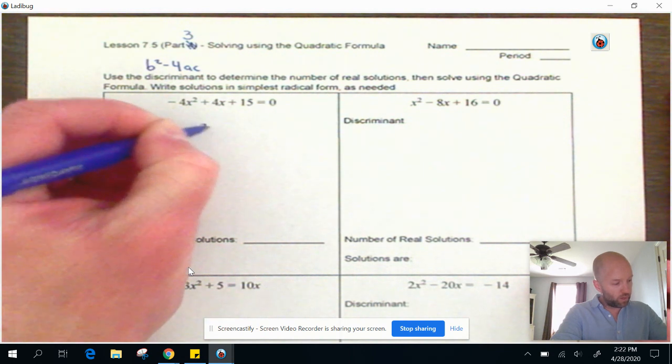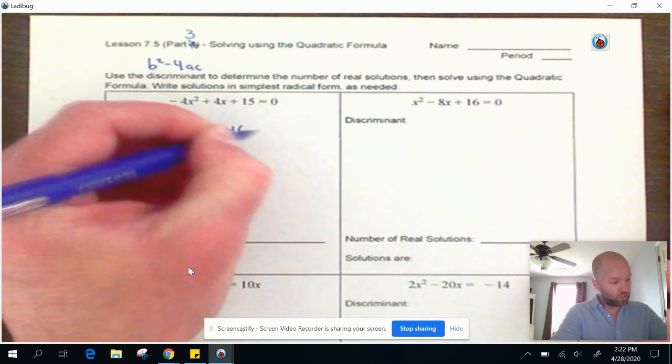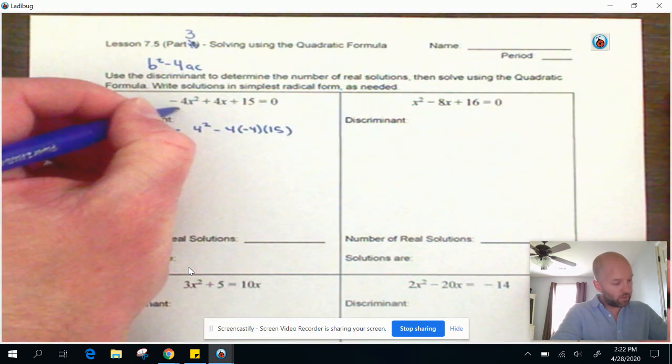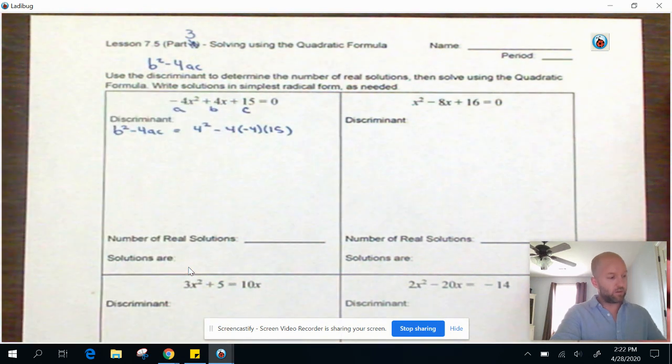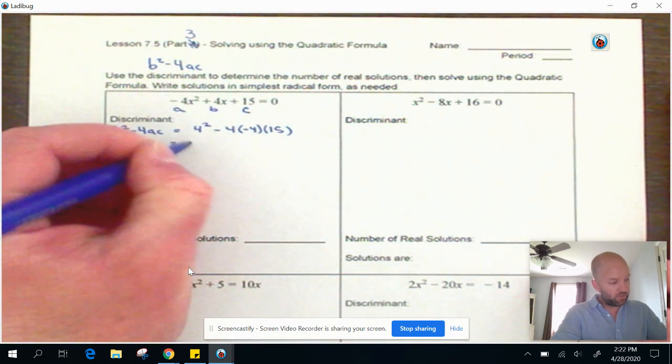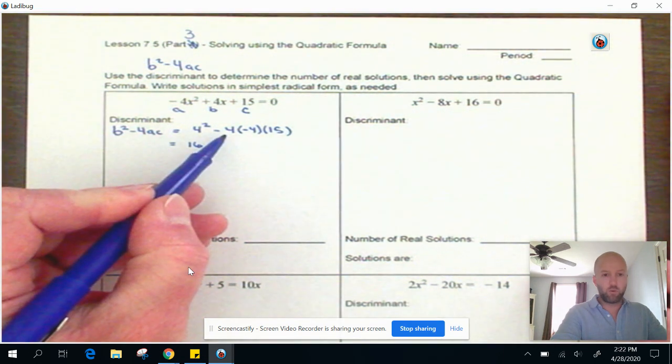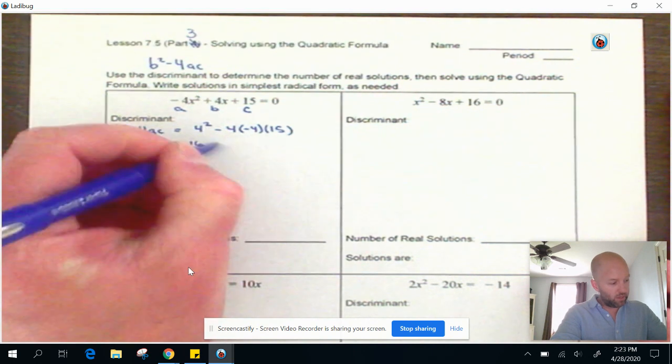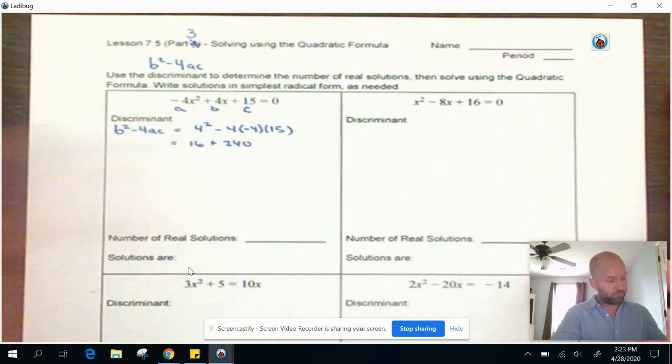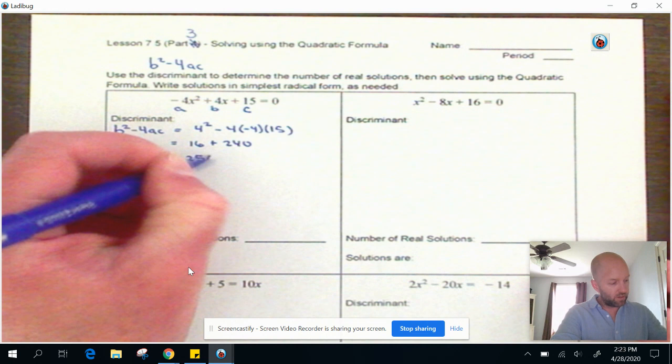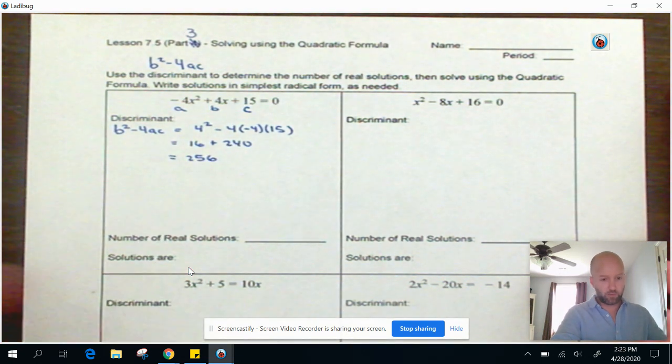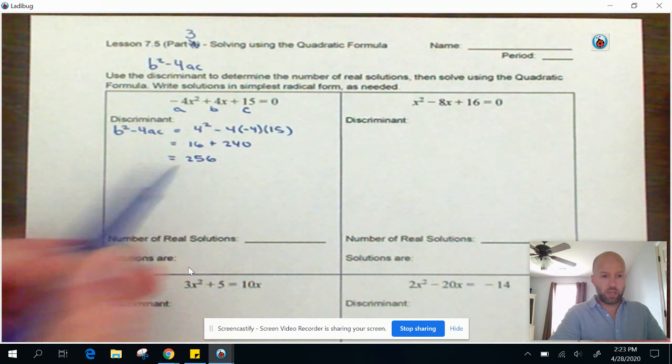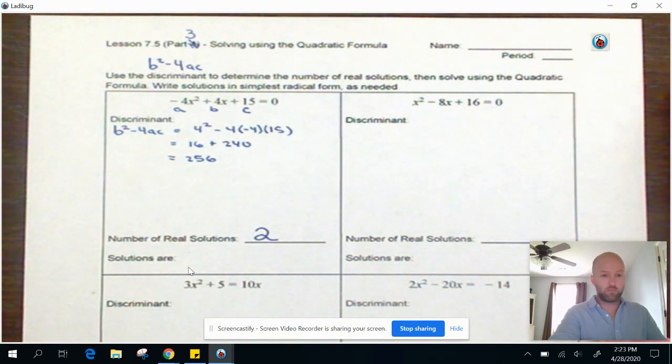I'm going to plug that in. So B is 4. So 4 squared minus 4 times A, which is negative 4, and C, which is 15. So this is A, this is B, this is C. And when I find that these values, so that's 16, and then a negative 4 times another negative 4 times 15, right? These two negatives make a positive, ends up being 240. The sum of these is 256. And that's nice because that's a perfect square. But if the discriminant is this value right here, if it's greater than zero, then we're going to have two real solutions.